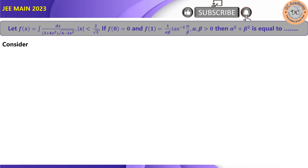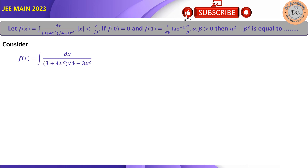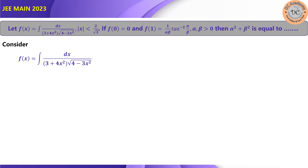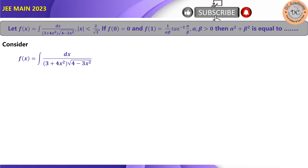We consider f(x) equal to the given integration. As we see, our problem involves (3 + 4x²) and (4 - 3x²). We need to evaluate this integration in such a way that tan inverse will appear, because that is given in the form of f(1).